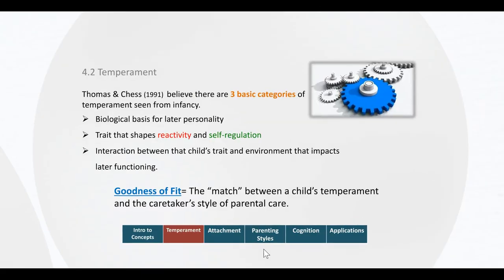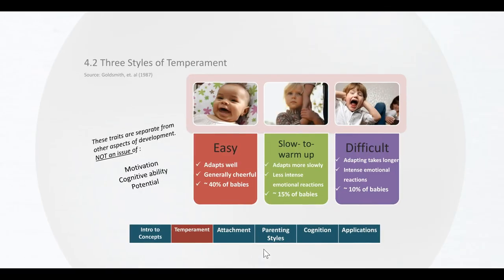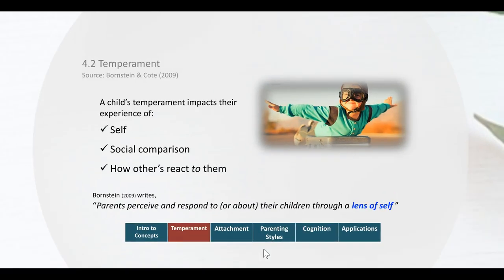Temperament refers to a more biological basis of a child's personality, including genetic tendencies. Children may or may not match the specific caretaker's style of parental care, and this is called goodness of fit. Children can be classified into a primary area of temperament called easy, slow to warm up, or difficult. Notice that the percentages don't add up to 100% because the same child may display characteristics of one or more of these categories. But temperament is really key to understanding later developmental outcomes.